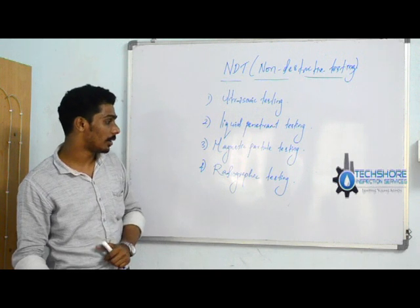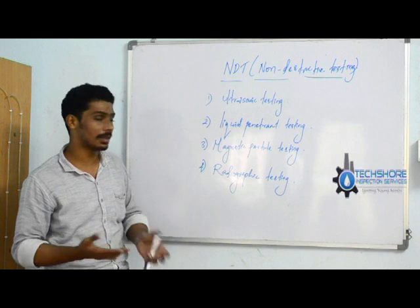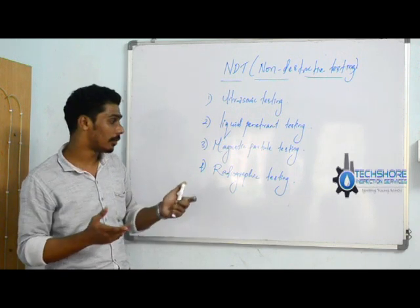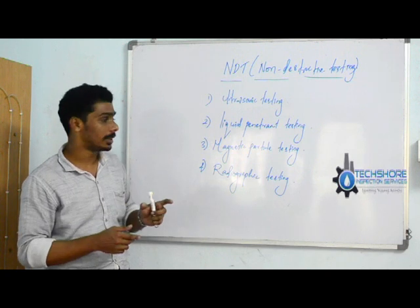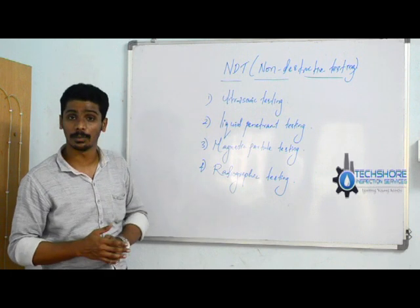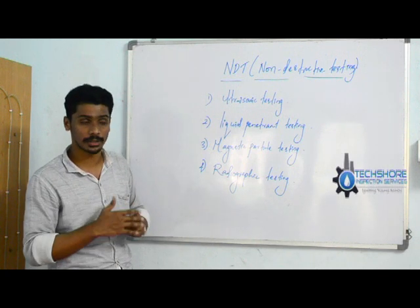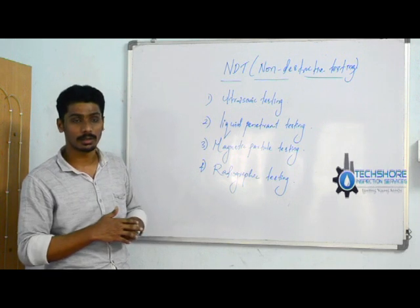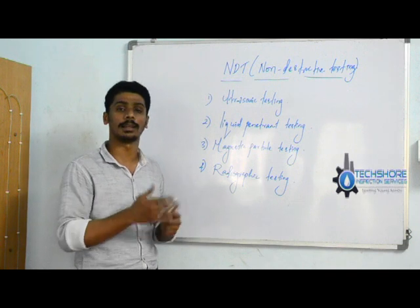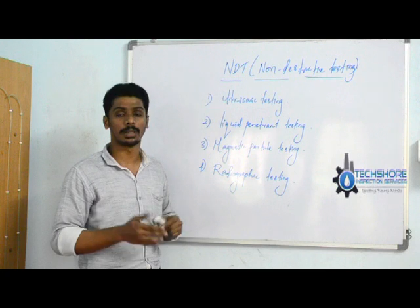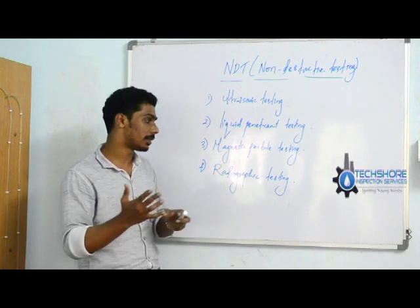The last method is radiographic testing. In radiographic testing, we propagate different types of rays — such as x-rays, alpha, beta, or gamma rays — into your test specimen. The resultant wave coming out of the test specimen is captured on a film. By looking at that film, we can determine the depth, shape, and size of any defect. For example, when you get a fracture in your hand, you go to a doctor and they take an x-ray — they pass x-rays through your hand and the result is captured on film, showing the shape or size of the fracture or crack.